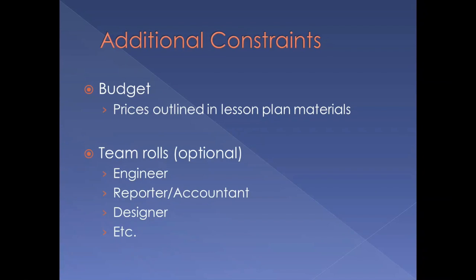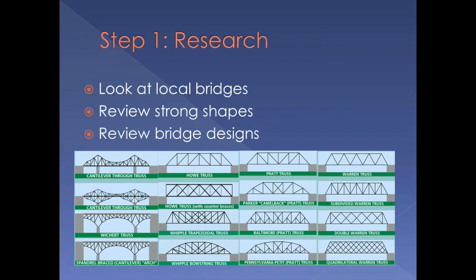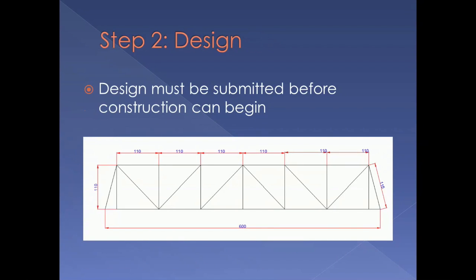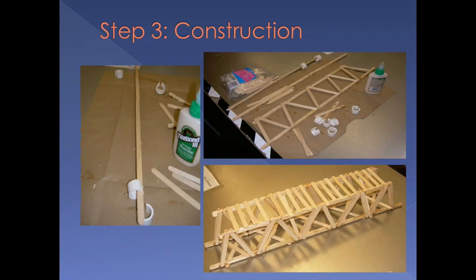Optionally, your teacher can mandate that you assign yourselves team roles. These roles can be engineers, reporters and accountants, designers, and other various roles. The first step of the activity is to research bridge designs — you should go out and look at local bridges, review strong shapes, and review bridge designs. There are a plethora of bridge designs available for inspiration. Next, you must submit a formal design before construction can begin, on graphing paper to scale or in a program like PowerPoint. The third step is the construction step, which will take place over several class periods.